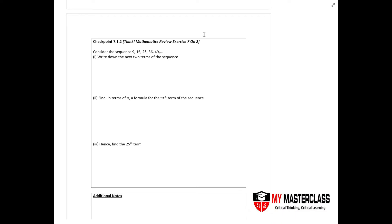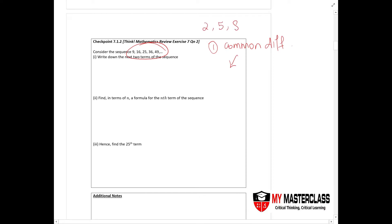On the topic of number patterns, when you encounter this kind of question, you need to take note of the number sequence. The first step is to find the common difference. For instance, with 2, 5, 8, 11, the common difference is plus 3. If a common difference exists, you apply the formula: a1 plus d times (n minus 1), where a1 is the first term and d is the common difference.